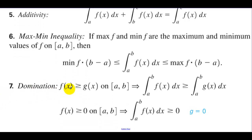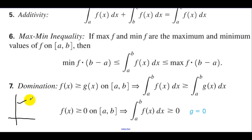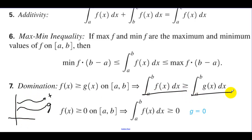Domination: if f(x) is greater than g(x) on [A, B], then the integral from A to B of f(x) is greater than the integral from A to B of g(x). If f(x) is always above g(x) — so if you have f here and g here — then there's going to be more area under f than under g.